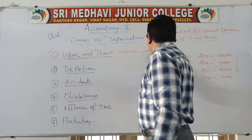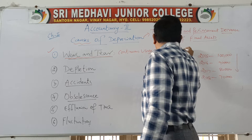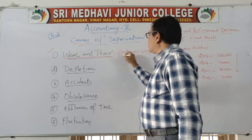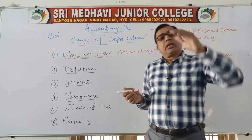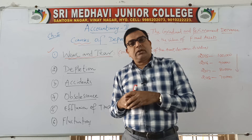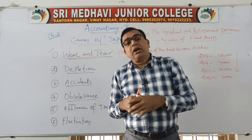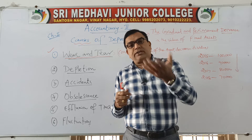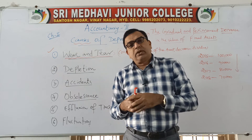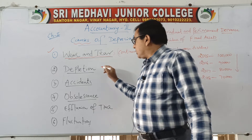Continuous usage decreases the asset's value because its efficiency decreases. For example, a new machine may consume only five units of power and produce fifty units of output, but as it becomes old it may consume ten units of power and give only forty units of output. Consumption expenditure increases while output decreases — this is how the machinery loses its efficiency, which is called wear and tear.